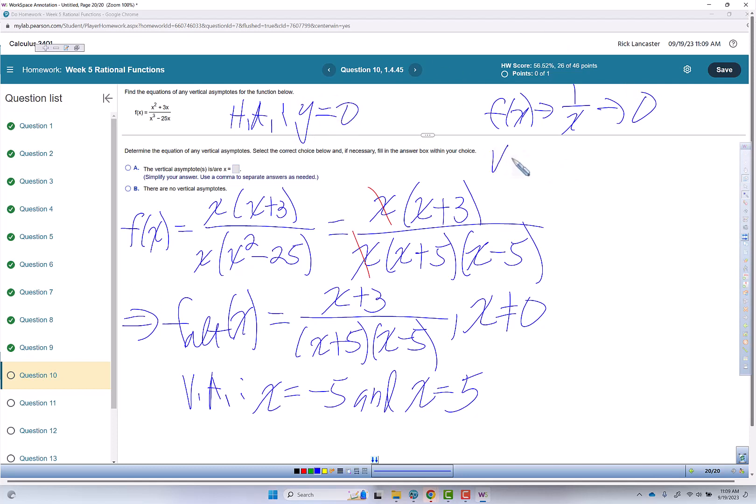So our horizontal asymptote is y equals 0. We've already talked about our two vertical asymptotes are x equals negative 5, x equals 5.